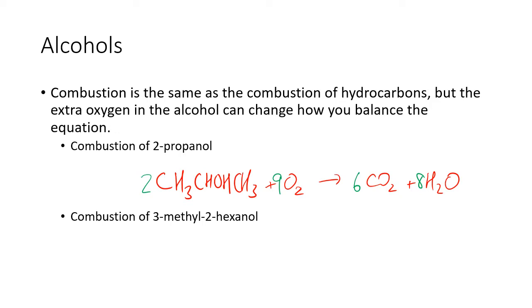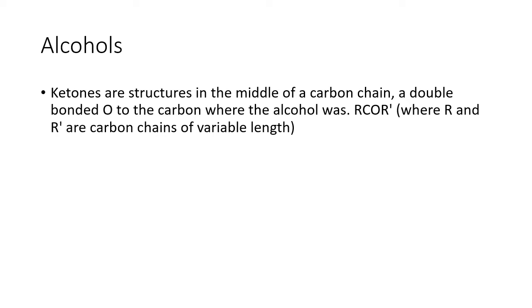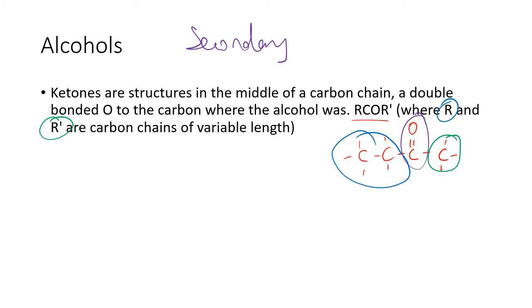When alcohols are oxidized with an oxidizing agent, remember this is secondary alcohols. Ketones are structures in the middle of a carbon chain, a double bonded O to the carbon where the alcohol was. We write this as RCOR' where R and R' are carbon chains of variable length. So it could be C-C double bonded to O and then C. Here R would be this carbon group and R' would be that carbon group. These could be variable length; the R group could be two long if you wanted it.